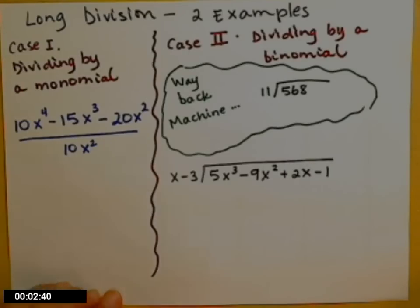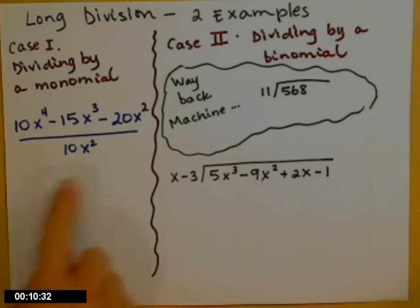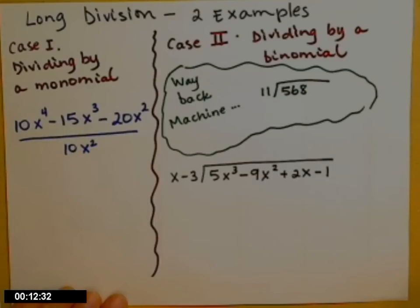Let's do two examples of long division with polynomials. The first case is the easiest — it happens when you are dividing by a monomial. Remember, monomial means one term.